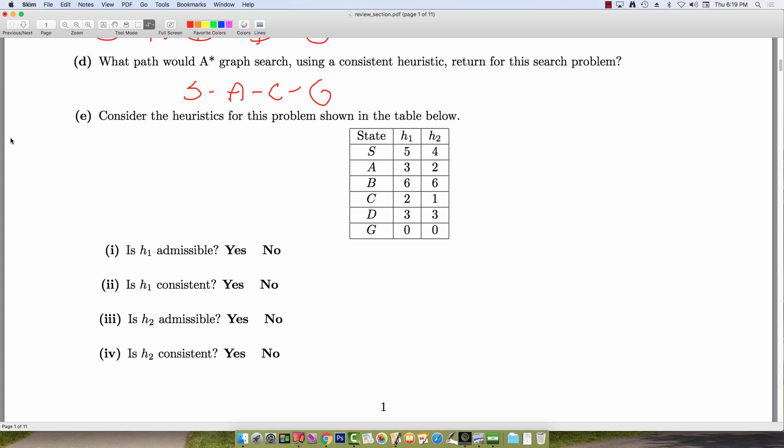For this next part, we'll be testing on admissibility and consistency of heuristics for A-star. So to remind you what that means, heuristic H is admissible if for each node N, we have that H(N) is less than or equal to H*(N), where H*(N) denotes the true cost of the cheapest path from N to the goal node.